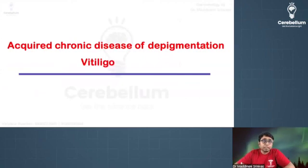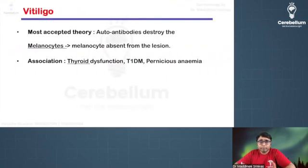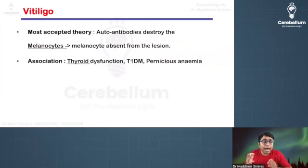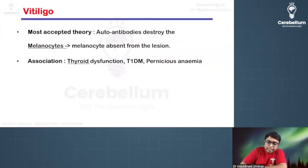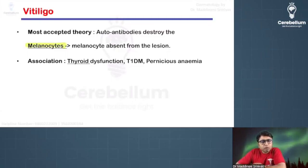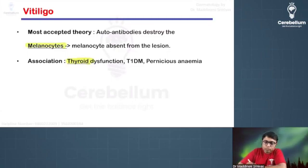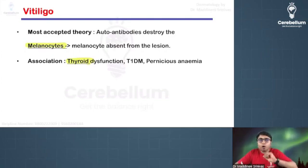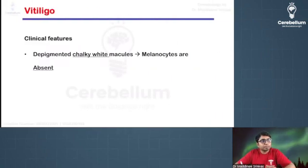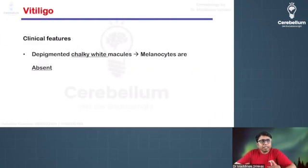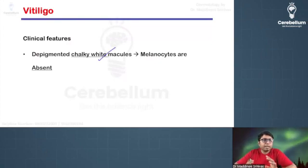Let us discuss vitiligo, which is an acquired depigmentary disorder. The basic problem is that patients are going to have auto antibodies against melanocytes, leading to destruction of melanocytes in a few areas of the body. It is usually associated with thyroid dysfunction — hypo or hyperthyroidism. Patients present to a dermatologist with chalky white, very white colored macules over the body.